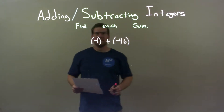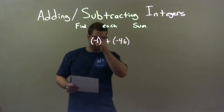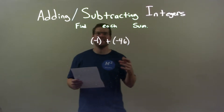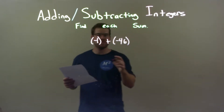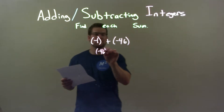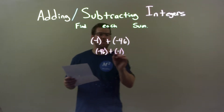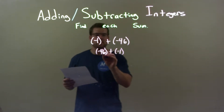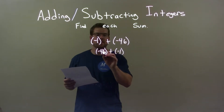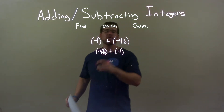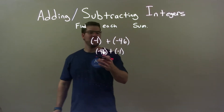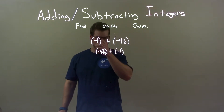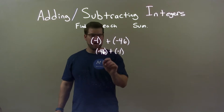So negative 1 plus a negative 46. I can kind of flip it around — I think it's easier to see as negative 46 plus a negative 1. Because with addition, the order doesn't matter. So negative 46 plus a negative 1, we just go one more to the left.